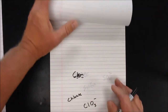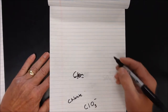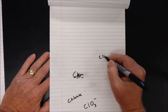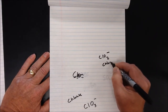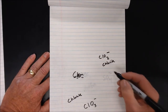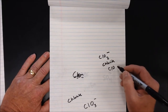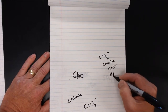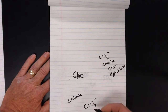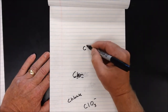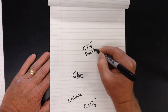From chlorate we can learn several more polyatomic ions. One less oxygen gives ClO2 with a minus one charge — that's chlorite. There's also ClO with a minus one charge — that's hypochlorite. And with one more oxygen, ClO4 with a minus one charge is called perchlorate.